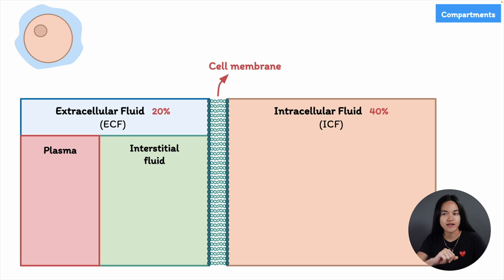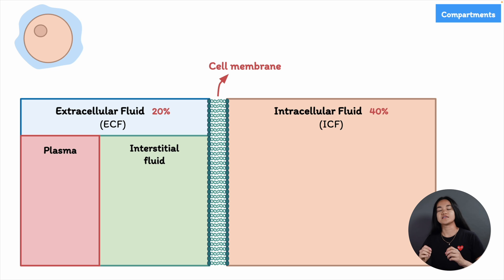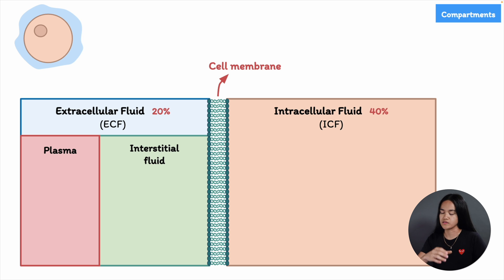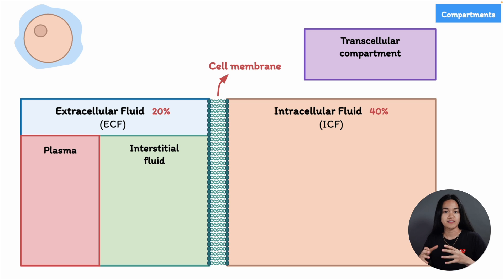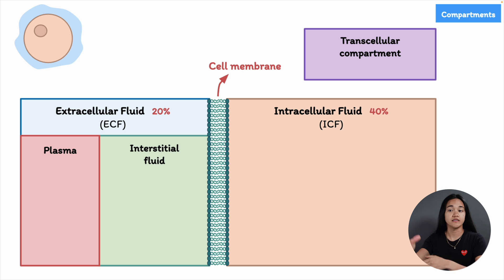The extracellular fluid is the sum of the plasma volume and interstitial fluid — two subcategories of fluid in the ECF: fluid inside vessels (plasma) and fluid outside vessels (interstitial fluid). The plasma volume represents a small portion of total body water, about 5%. There's also the transcellular compartment, which includes cerebrospinal, peritoneal, and synovial fluids, making up a very tiny percentage. We're going to focus on the ICF, the ECF, the interstitial fluid, and the plasma.